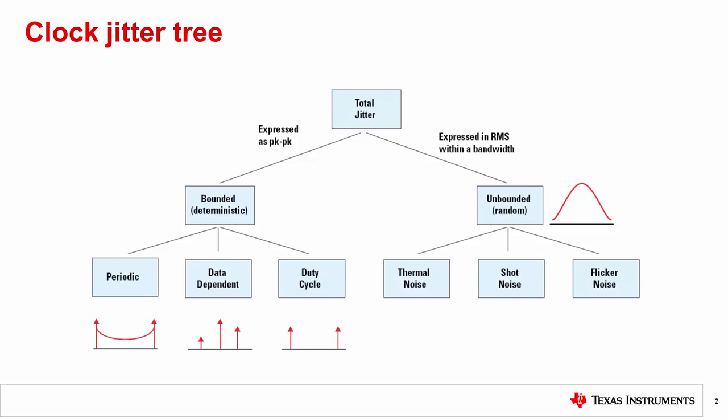Deterministic jitter can be periodic, like noise from a DC-DC switcher, or data-dependent, like inter-symbol interference. Data-dependent deterministic jitter can also be non-correlated as well as correlated. While random jitter is difficult to eliminate, deterministic jitter can be reduced by careful system design.